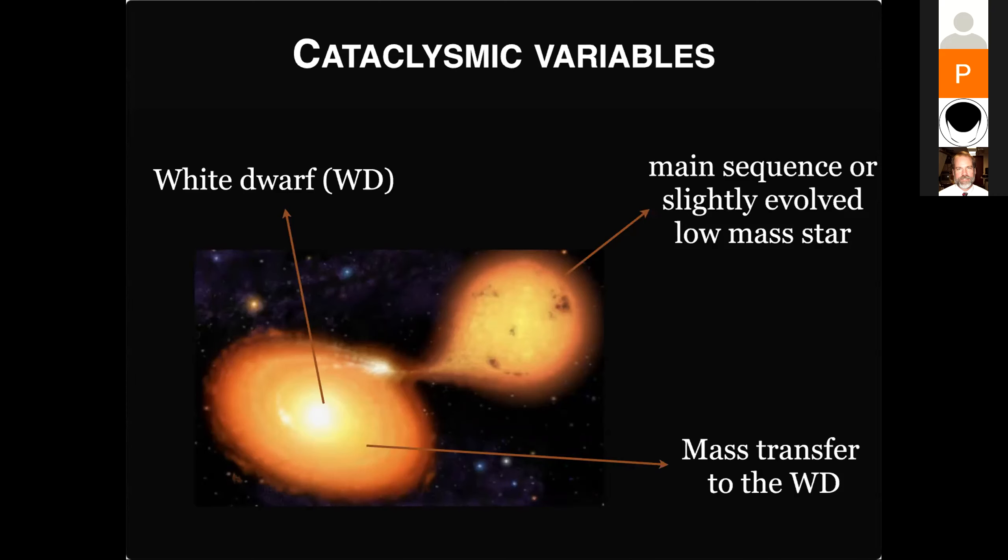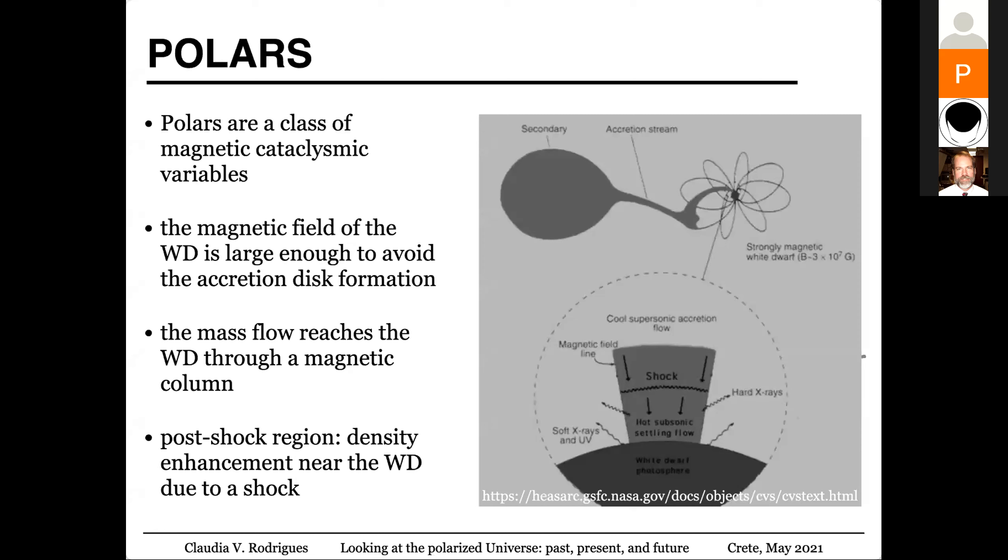But if you have the white dwarf with a large magnetic field, we are talking about 10 to 100 megagauss magnetic field, the accretion disk does not exist. We have a magnetic accretion column, and very near the white dwarf, this accretion column reaches supersonic velocity, then a shock develops.